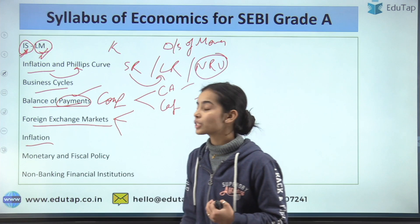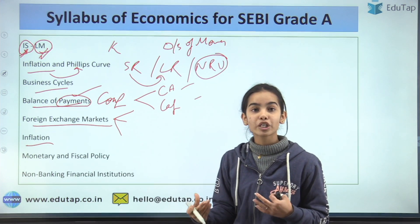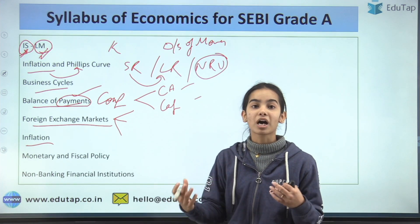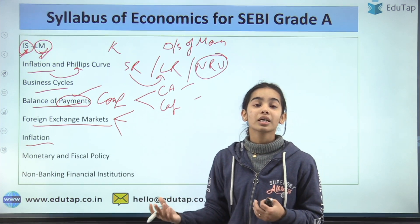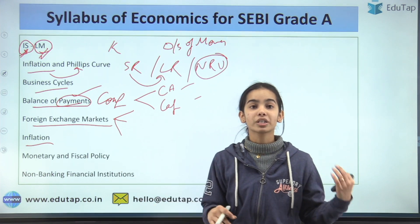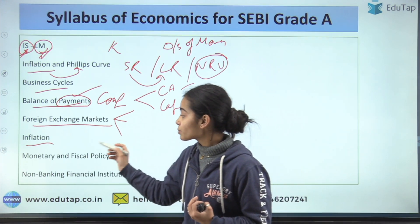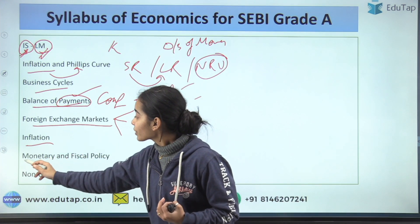Then comes inflation: the types of inflation, the causes of inflation — demand-pull inflation, supply-side inflation, demand-side inflation, and cost-push inflation.